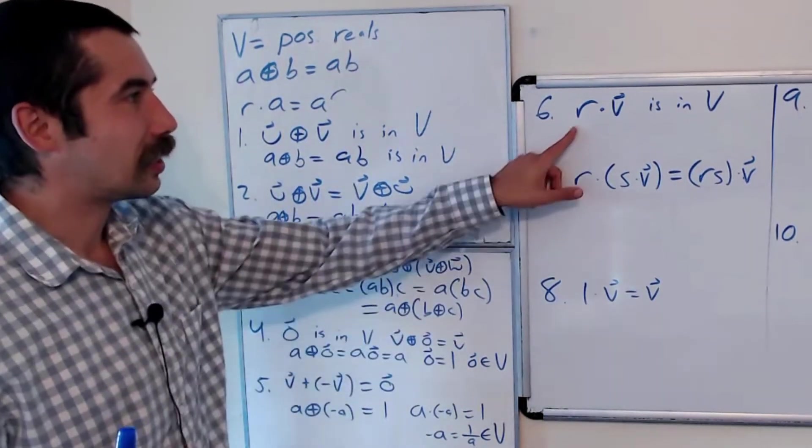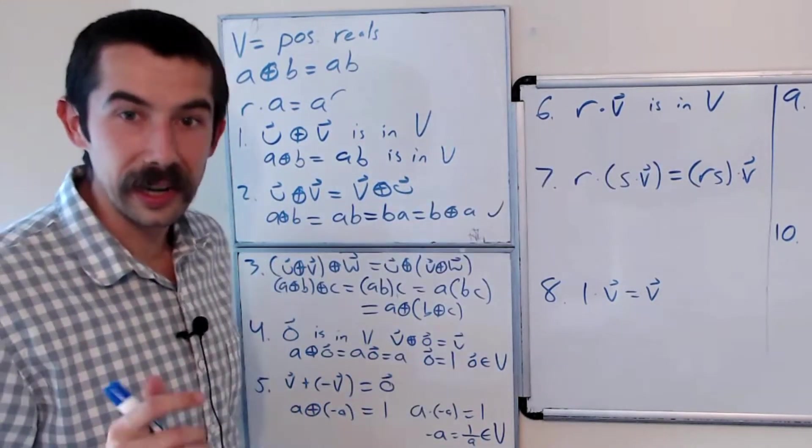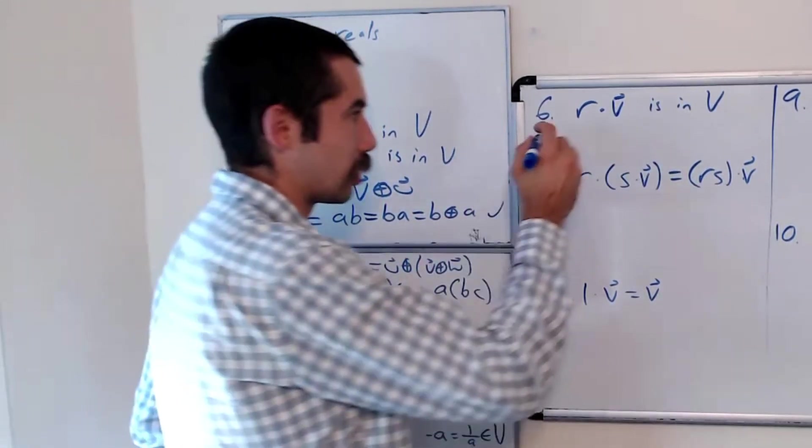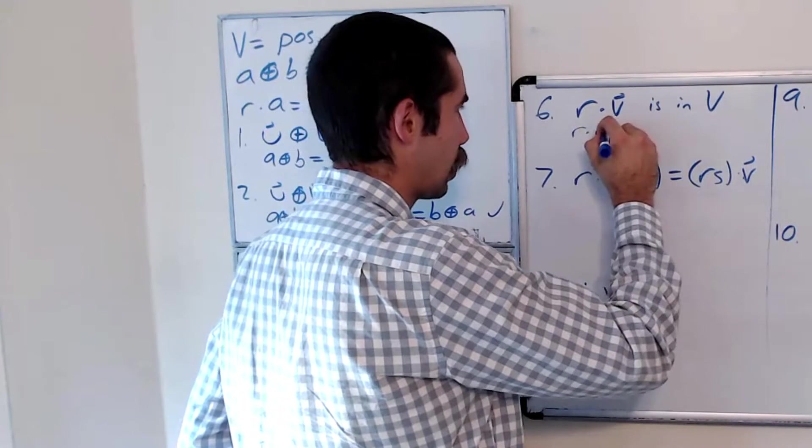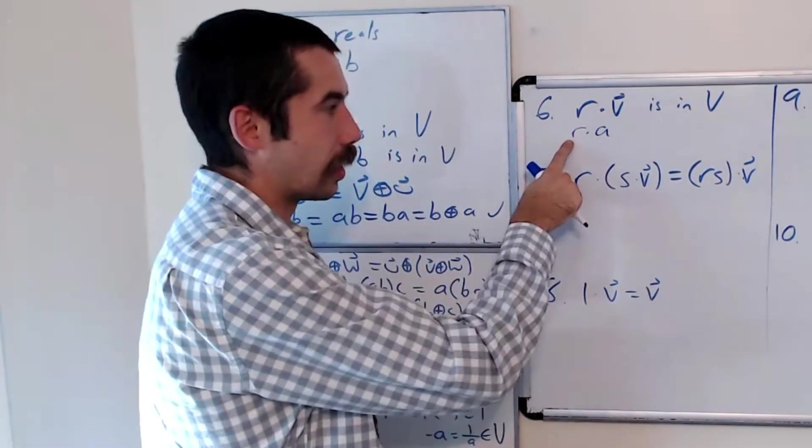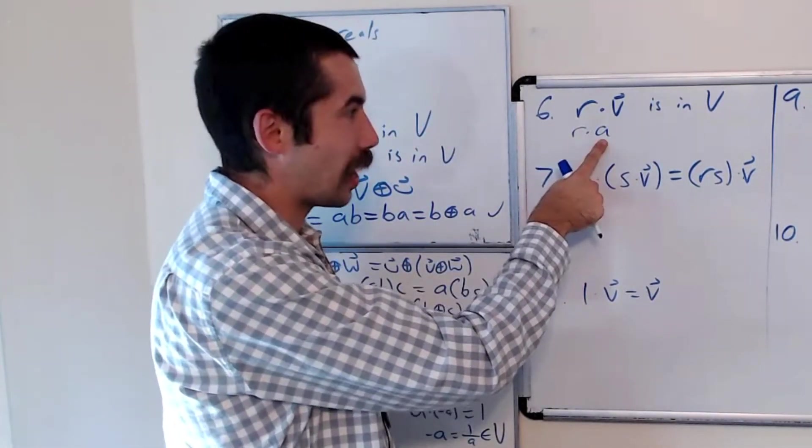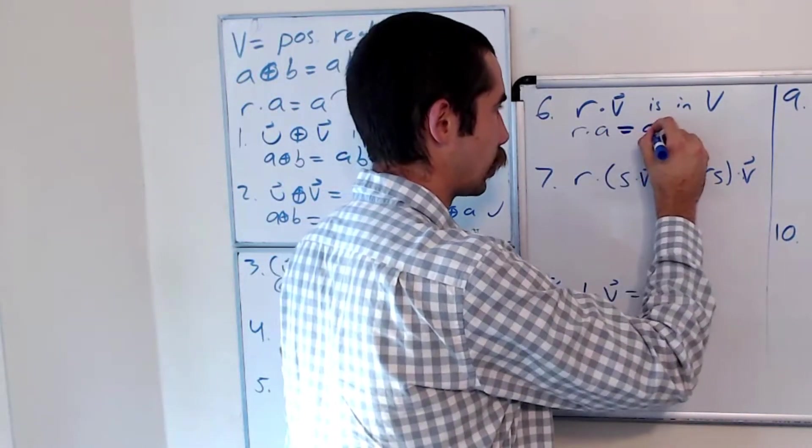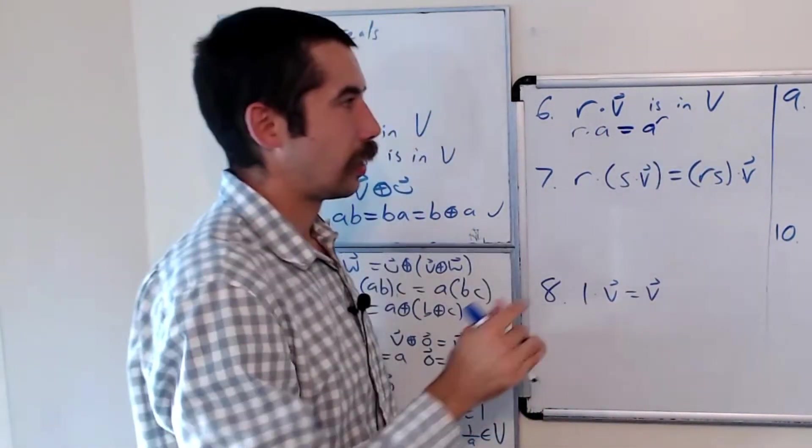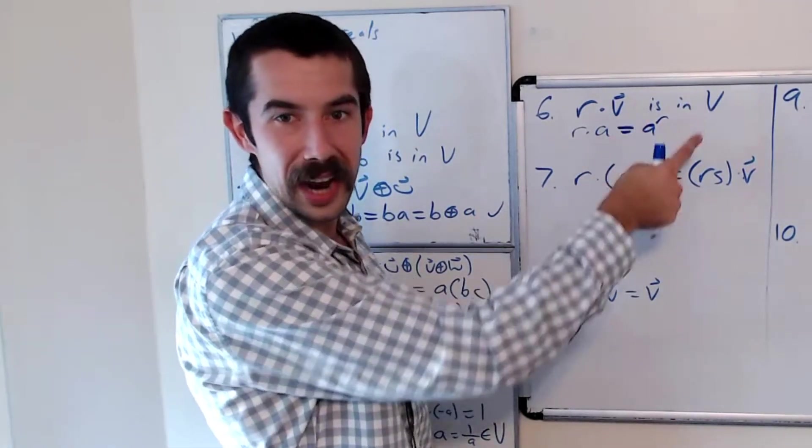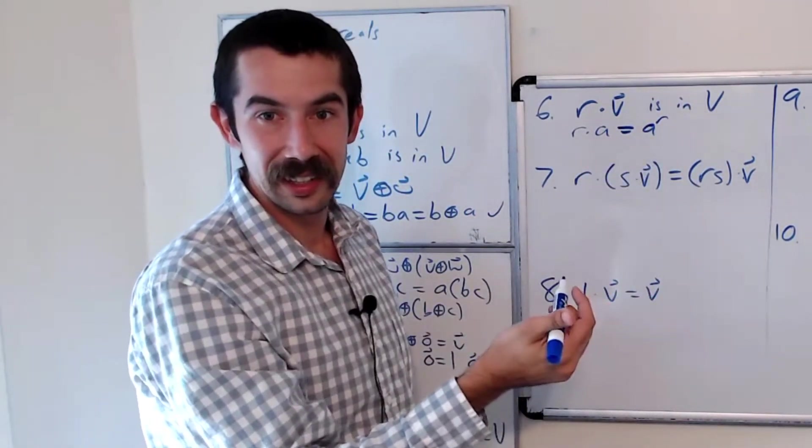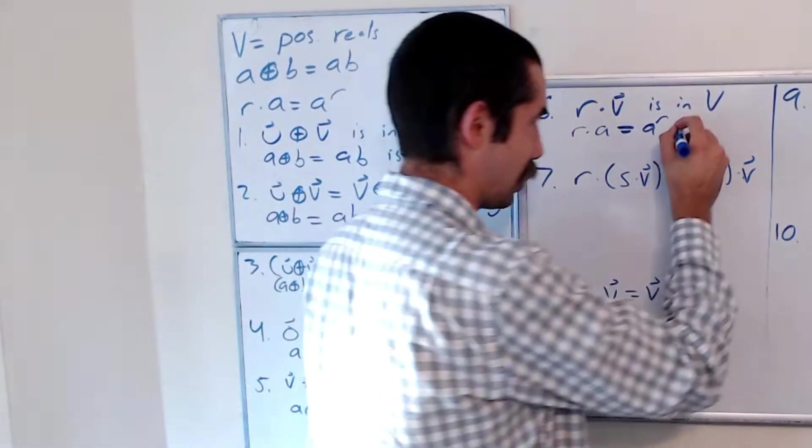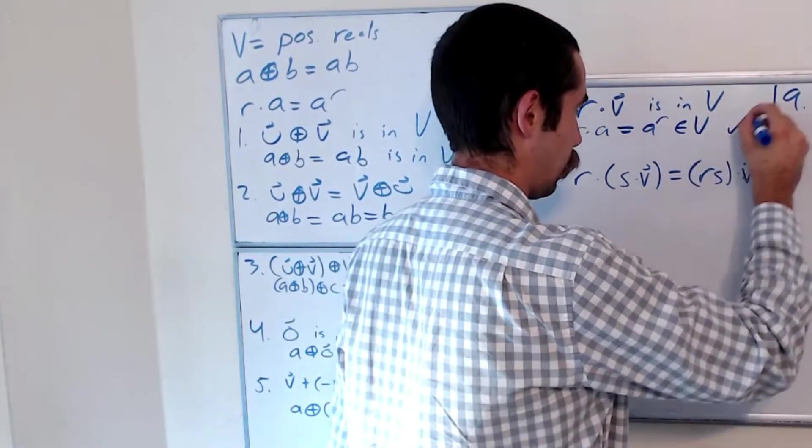What's next? Any scalar times a vector should stay in our set. So let's do r·A. R is any real number, A is any positive real number. We know by definition this is equal to A^r. And a positive real number raised to any real power is still positive. So this is in V.